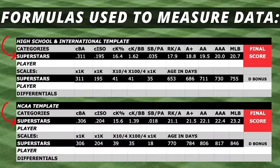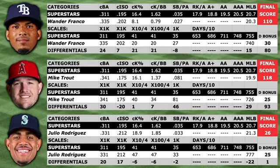Here are both formulas I used to calculate each player's score. Both formulas are exactly the same except for the data compiled from the two subgroups. The black line with the arrow is the average of the MLB superstar stats. The first white player bar is where you insert any player you are trying to measure. The middle gray bar shows the scales I used to equalize each stat, and the bottom gray bar shows the differentials which lead to each player's final score. I created a defensive bonus for most games played at a certain position: shortstops receive 30 points, catchers and centerfielders get 25, third basemen get 20, second basemen and right fielders get 15, left fielders get 5, and first base and DHs get no defensive bonus. Here are three examples of how the formula works with Wander Franco, Mike Trout, and Julio Rodriguez — I plugged in their career minor league stats, adjusted the numbers via the scale, totaled up the differentials, and added a defensive bonus to come to my final score.